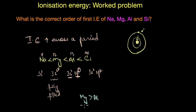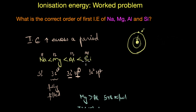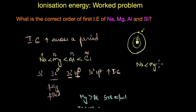In fact, the first ionization energy of magnesium is about 737 kilojoules per mole, while that of aluminium is about 578 kilojoules per mole. Although silicon also has its outermost electrons in the 3p orbital, it has one more proton than aluminium, meaning its electrons experience greater nuclear attraction, increasing the ionization energy. So the correct order is Na < Al < Mg < Si — or equivalently, Na < Mg > Al < Si.